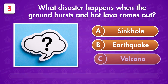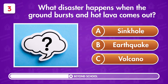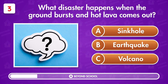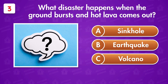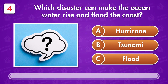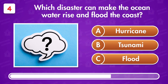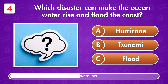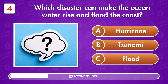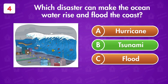What disaster happens when the ground bursts and hot lava comes out? What disaster can make the ocean water rise and flood the coast? This is a tsunami.